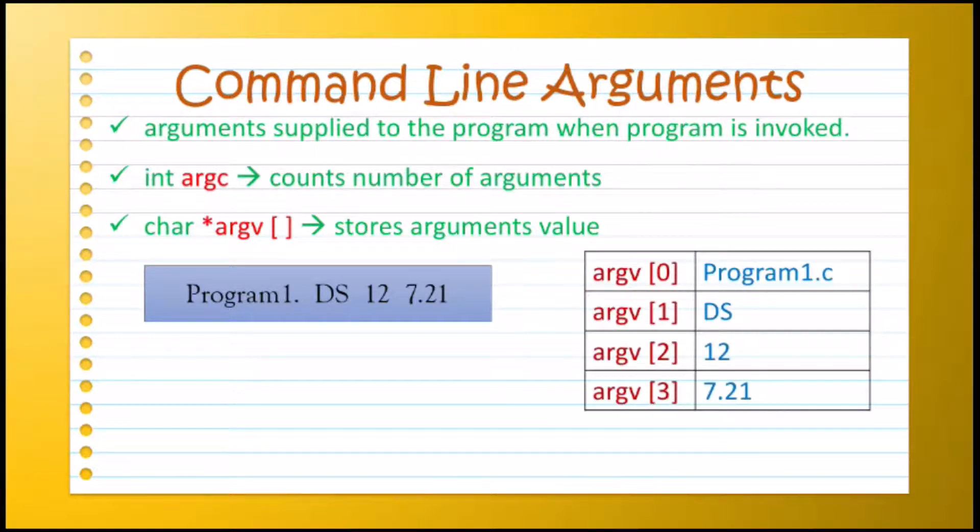So this is the graphical structure of array ARGV. The first argument, that is the name of program, will be stored in ARGV[0]. So ARGV[0] will hold the value program1.c.